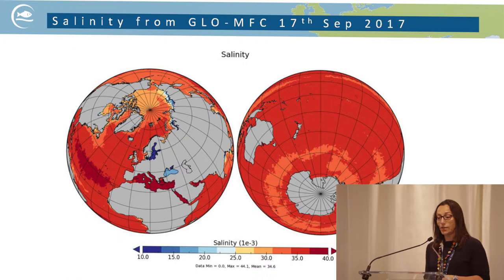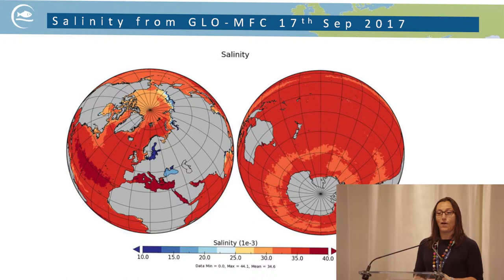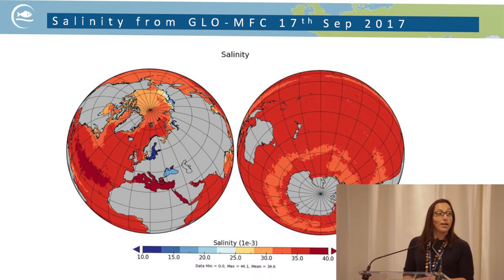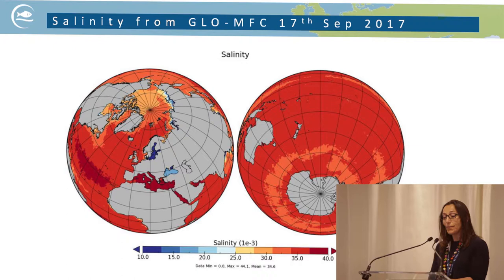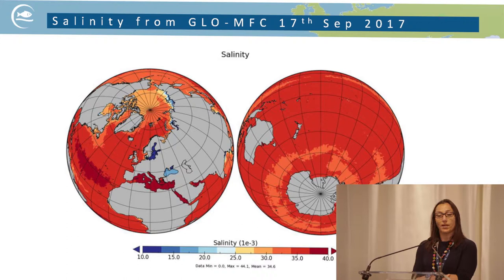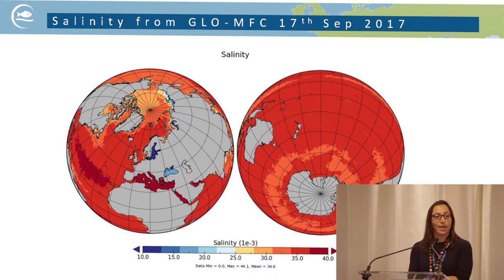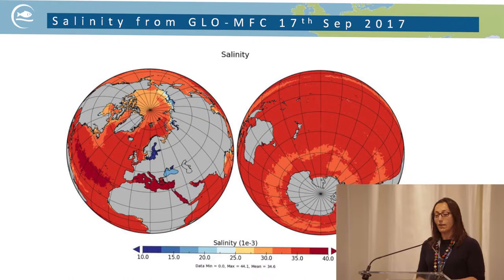In these pictures, I show the salinity field from the global high-resolution system. There are three semi-enclosed regional seas you can easily identify by salinity. The Baltic has very low salinity values compared to the mean ocean. The Black Sea is connected via a complex strait system to the Mediterranean Sea, which also has quite low salinity.